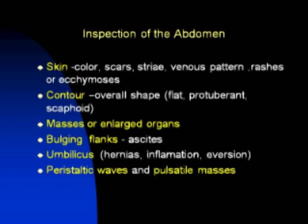Try to assess the contour of the abdomen — is it flat, protuberant, or scaphoid? Look for masses, enlarged organs, or any bulging flanks. Take a closer look at the umbilicus for any signs of herniation, inflammation, or eversion. Finally, watch for peristaltic waves and pulsatile masses, especially in older individuals with atherosclerotic processes.